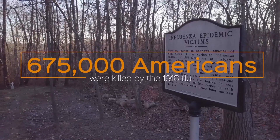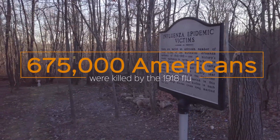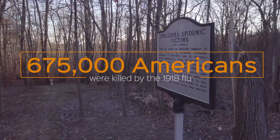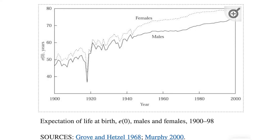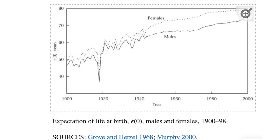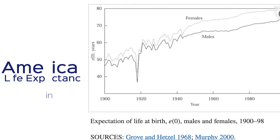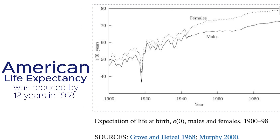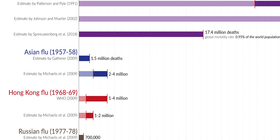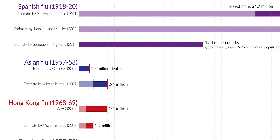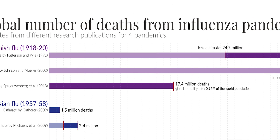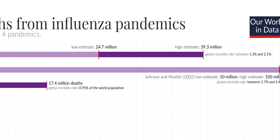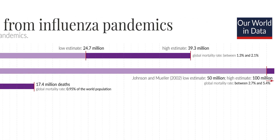The flu killed over 675,000 Americans in total. The impact on the population was so severe that in 1918, American life expectancy was reduced by 12 years. Globally, the 1918 flu remains the most deadly modern pandemic to date, having killed an estimated 1–3% of the world's population.